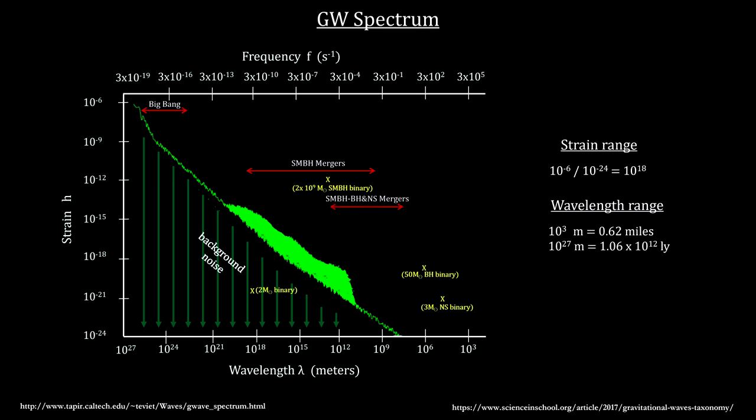Here's the range for supermassive black hole mergers with stellar mass black holes and neutron stars. And here's the range for stellar mass black hole mergers with stellar mass black holes and neutron stars, as well as with stars.